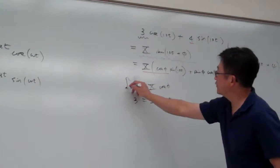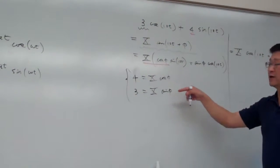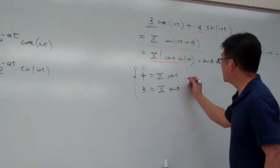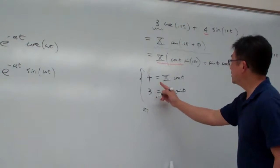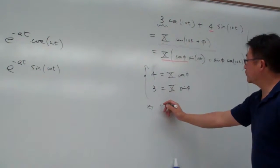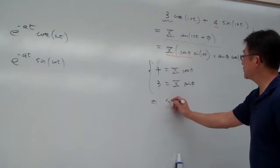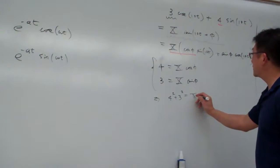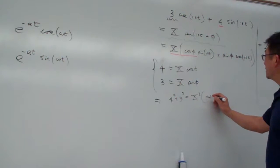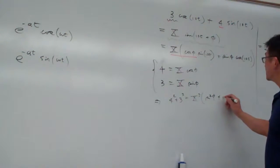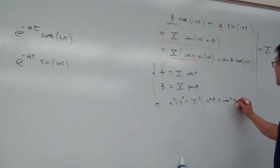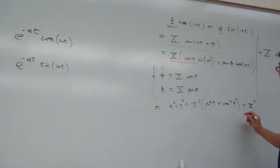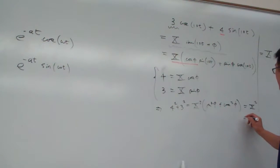With these two equations, you should be able to solve for capital X. From the first equation, you simply take the square — so that is 4 squared plus 3 squared equals capital X squared, times sine squared plus cosine squared. That is capital X squared, so therefore capital X is equal to 5.